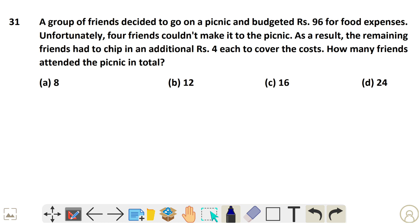Question 31: A group of friends decide to go on a picnic and budgeted Rs. 96 for food expenses. Unfortunately, four friends couldn't make it. As a result, the remaining friends had to chip in an additional four rupees each. How many friends attended the picnic in total?